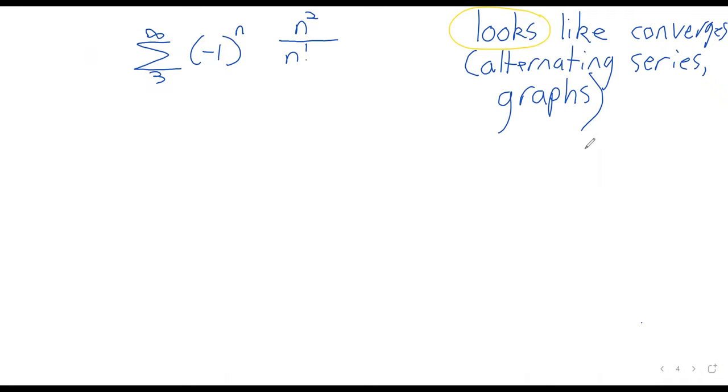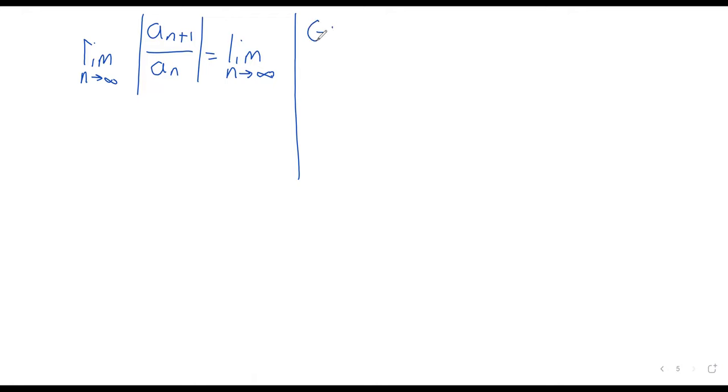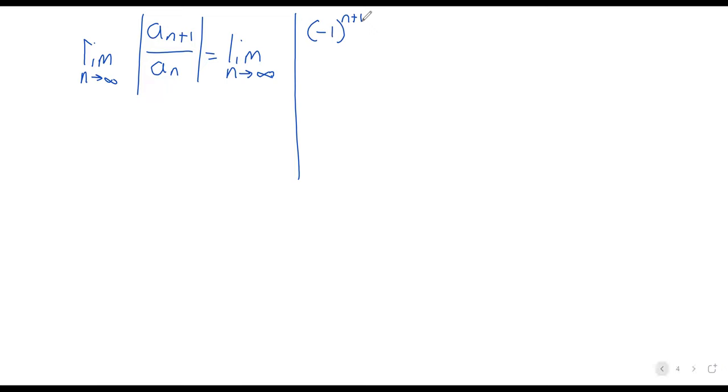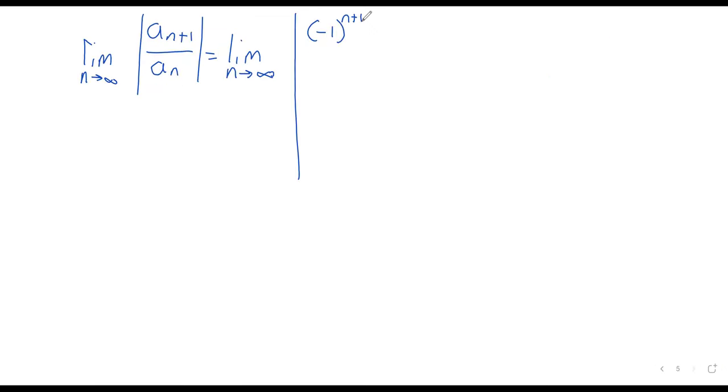So negative one to the n plus one, n plus one squared over... Nope. That would have been a sad thing to have gotten to the end of the problem and got completely the wrong answer. And then what happened. n plus one factorial. Then in the bottom, negative one to the n, n squared over n factorial.